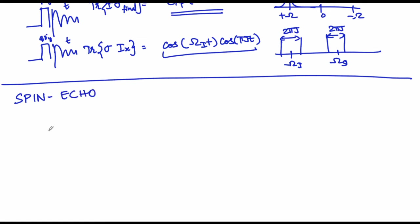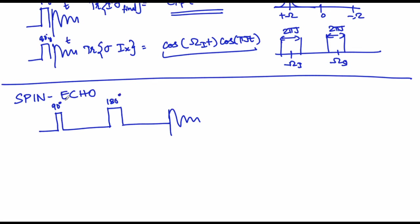The spin echo module has a pulse program with two pulses: one is a 90 degree pulse and the other is a 180 degree pulse. We can take this as 90y and 180x. This is being done for a proton experiment. The time t, the duration between the 90 and 180 pulse, is kept as τ, and the duration from 180 to acquisition is also kept as τ, where τ is a constant time delay.